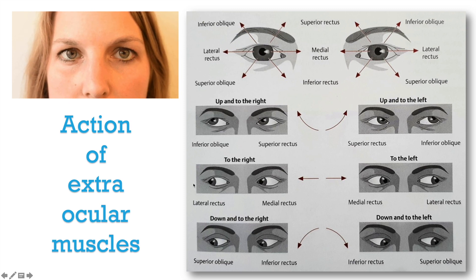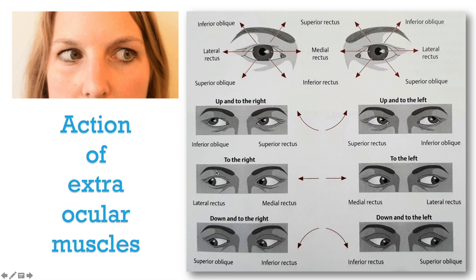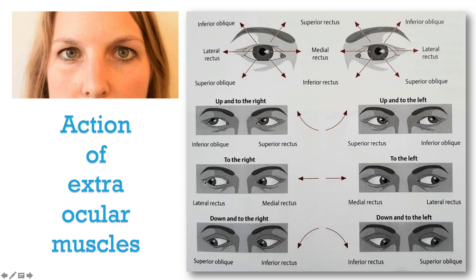Looking towards the right side: in the right eye it will be lateral rectus. All the muscles mentioned here are the prime movers — it doesn't mean other muscles have no role. Looking towards the right with the right eye, lateral rectus is predominantly acting, but inferior oblique and superior oblique also have some role. For a single answer, lateral rectus moves the eyeball laterally. At the same time, the medial rectus of the left eye will pull the left eye towards the right side.